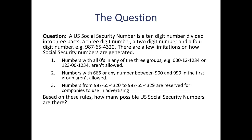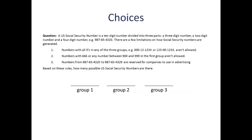Based on these rules, how many possible U.S. Social Security numbers are there? We can start this off using our line method. Each Social Security number has three parts, so we can think of the question as having to make three choices: one for the number in the first group, one for the number in the second group, and one for the number in the third group.